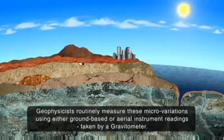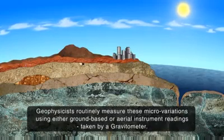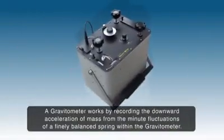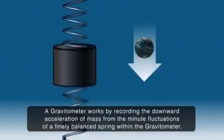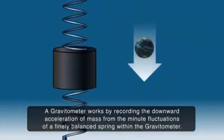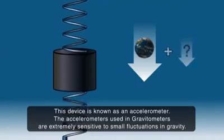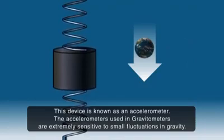Geophysicists routinely measure these micro-variations using either ground-based or aerial instrument readings, taken by a gravitometer. A gravitometer works by recording the downward acceleration of mass from the minute fluctuations of a finely balanced spring within the gravitometer. This device is known as an accelerometer, and the accelerometers used in gravitometers are extremely sensitive to small fluctuations in gravity.